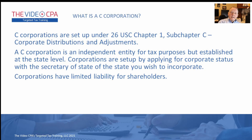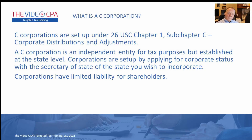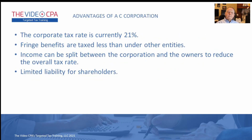Most major companies in the United States are C corporations. Smaller companies are generally S corporations. Big companies with over a certain number of shareholders are not allowed to be S corporations, which is why they are C corporations. That said, if you've got a small business, an S corporation is generally a better way to go than a C corporation.